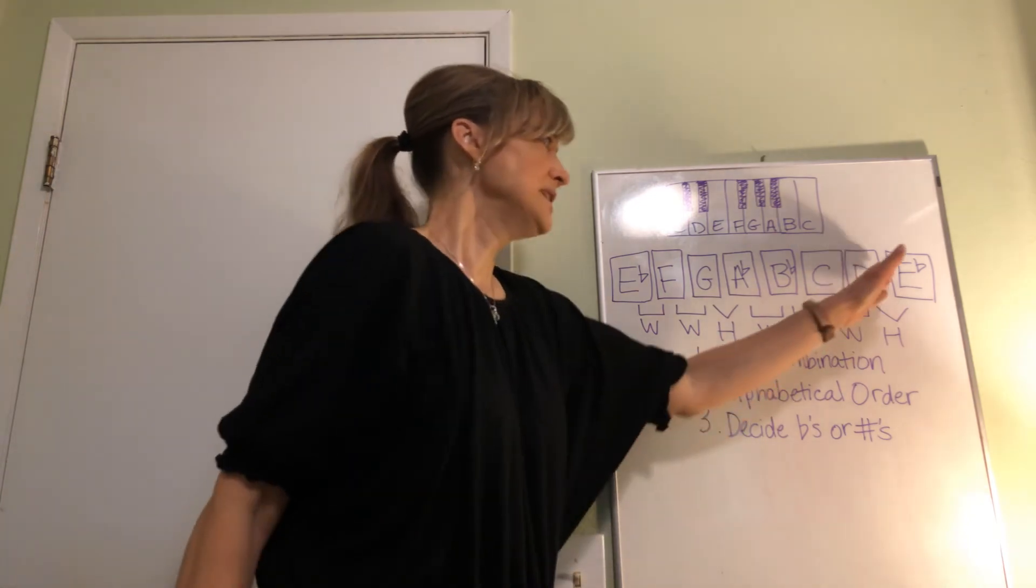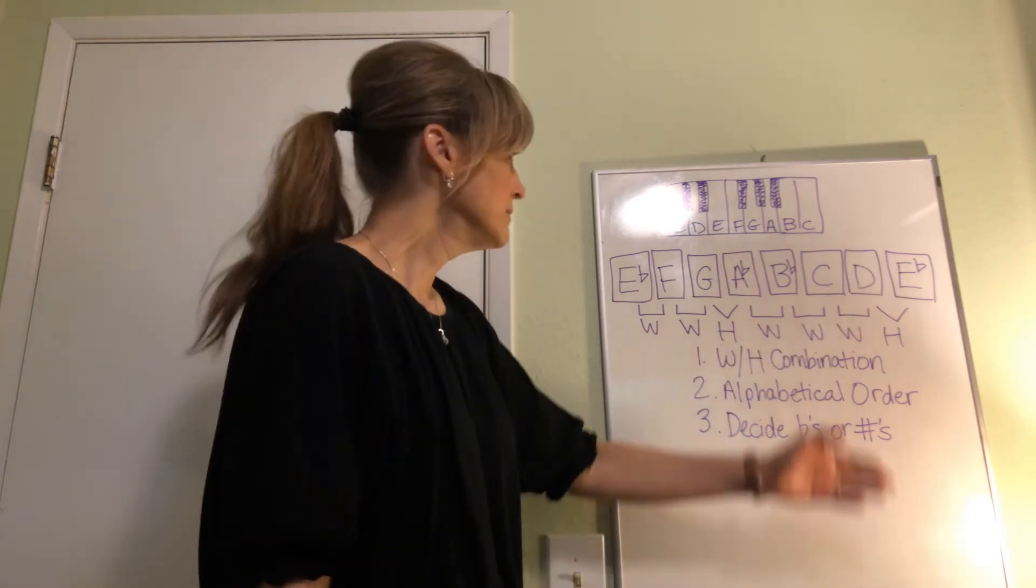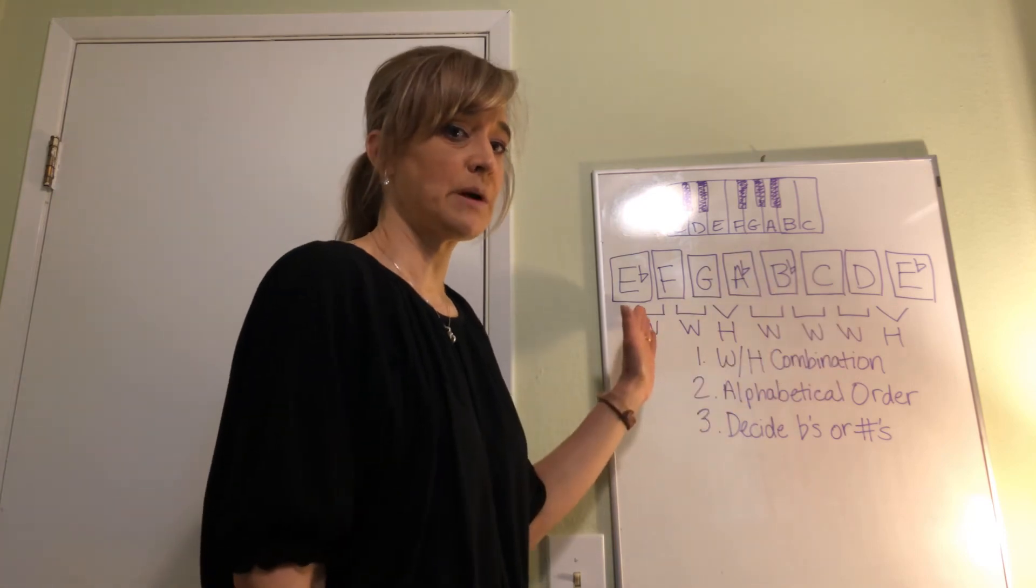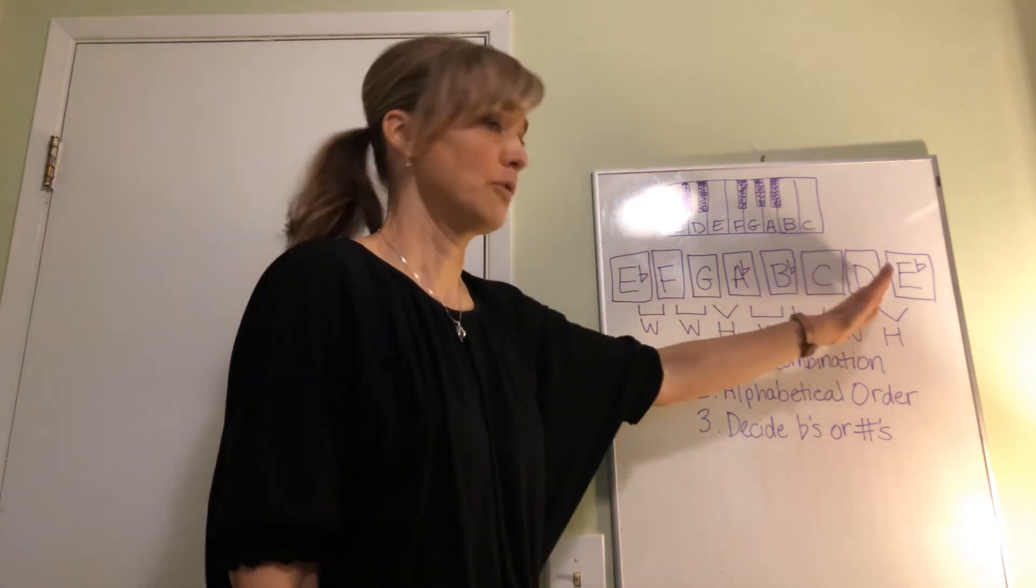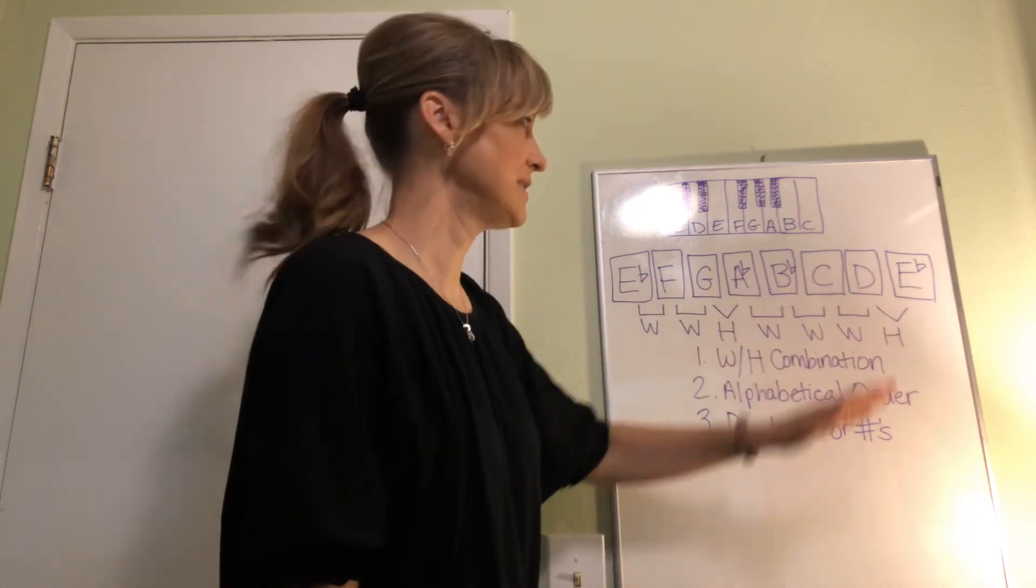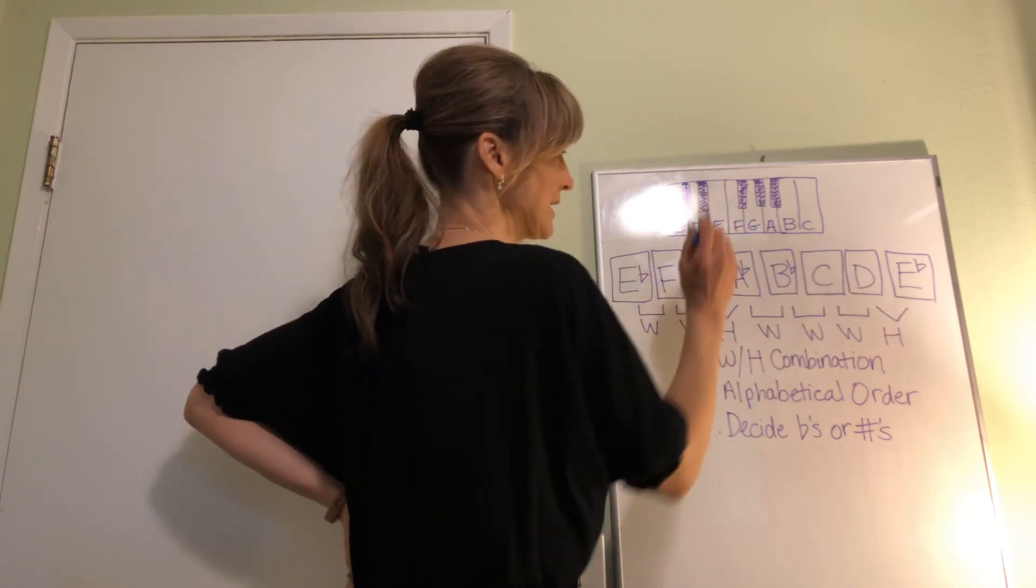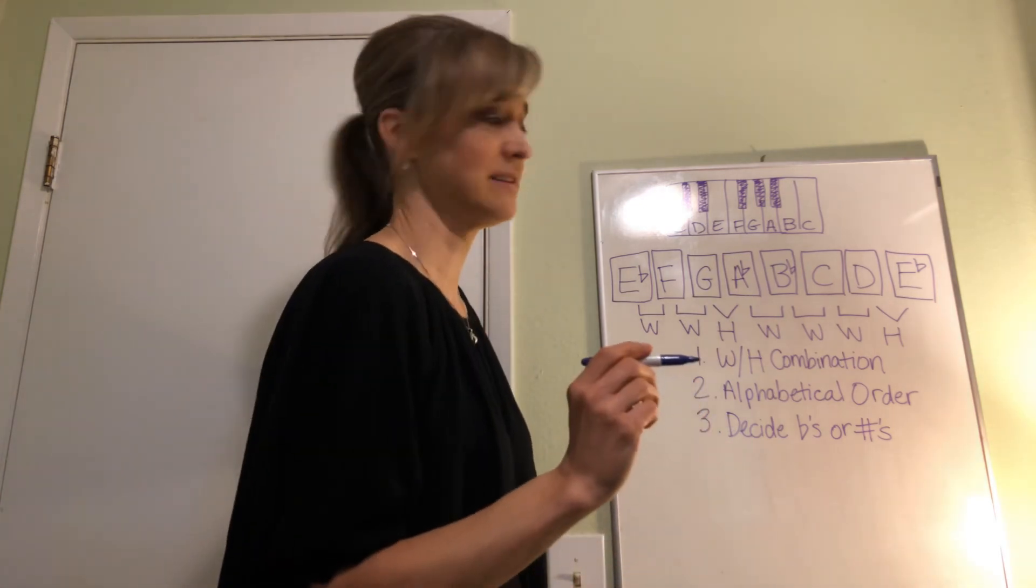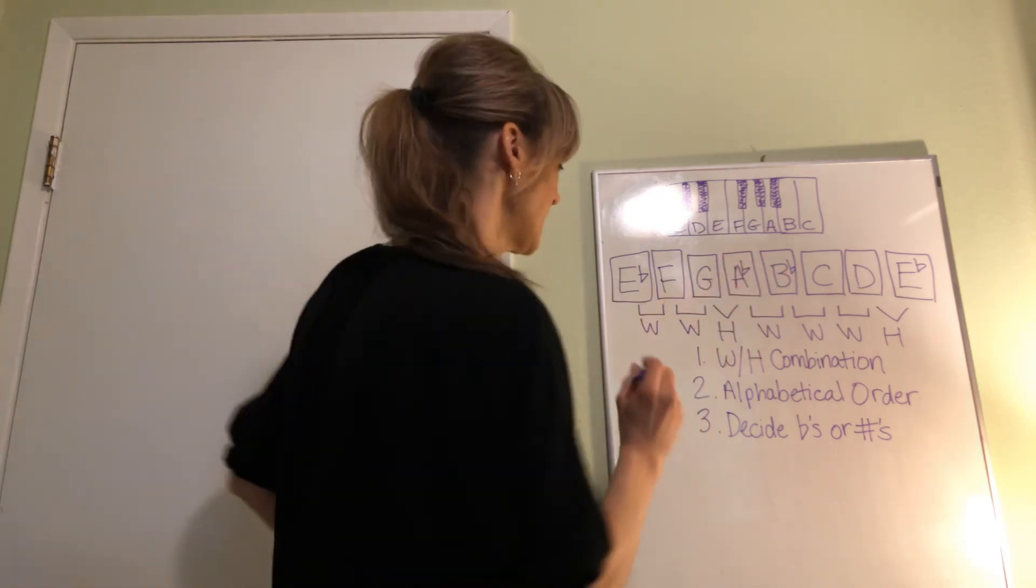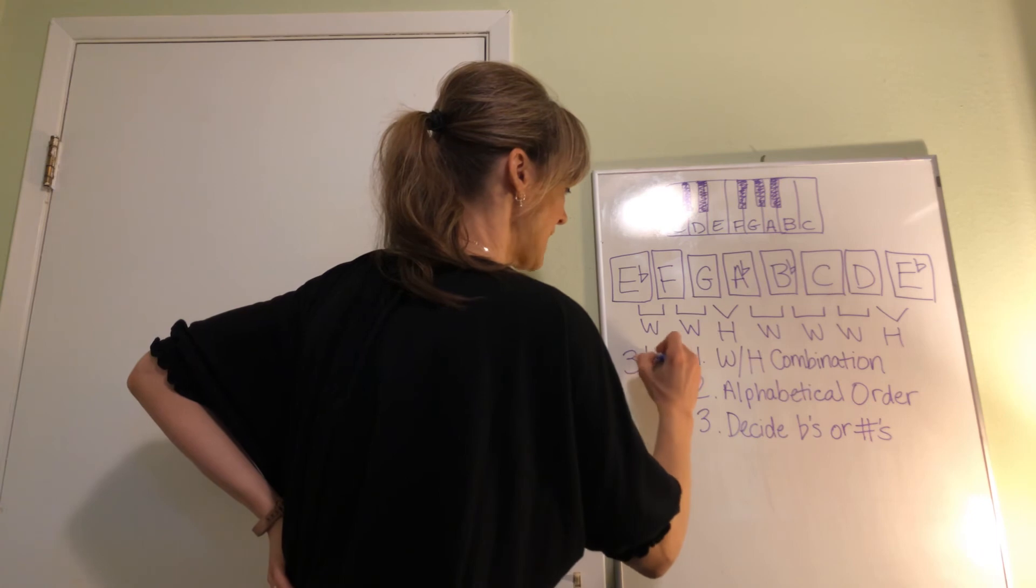Now, if D to E-flat is not a half step, then we would go back and say we screwed up somewhere, because we're at the end and it's not a half step. Let's see if it is. D to E-flat. D goes to E-flat, the black key. Half step? Yes, it is. So our E-flat scale has three flats in it.